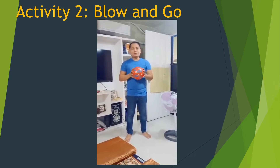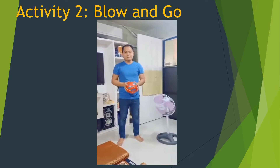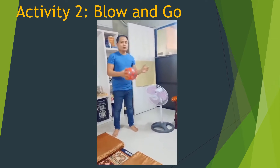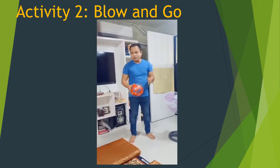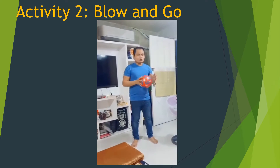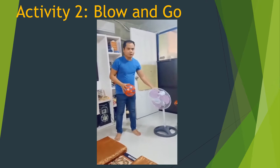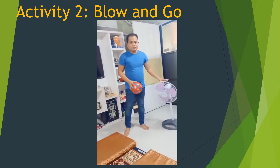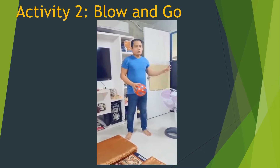Today we are going to do an activity we call Blow and Go. Our materials are a ball and an electric fan. We are going to compare how far the ball will travel using a varying force. For the first activity, we will use number 1 on the electric fan, and for the second activity, number 3 — meaning from moderate to hard force.